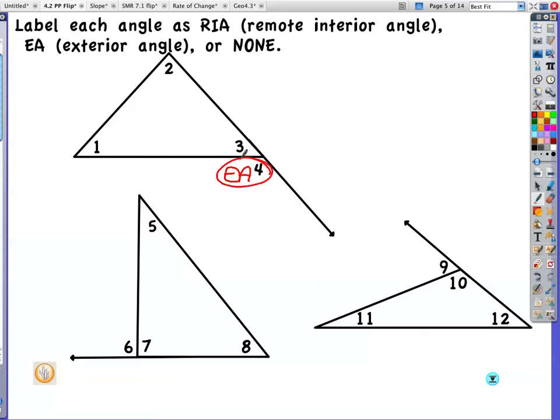So we're going to label some here. We're going to label remote interior, or EA for exterior angle. So here is my exterior angle. Lovely. Angle four. And my remote interiors, right here. And here's my other remote interior. Three is not the remote interior because it's not remote. It's right next to. Adjacent would be the word we'd look for.